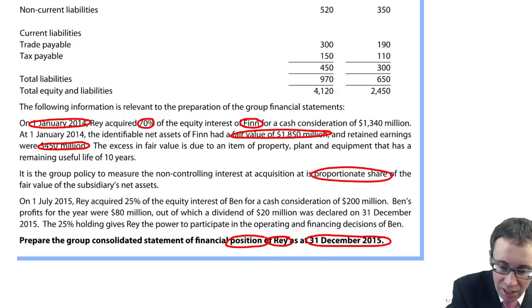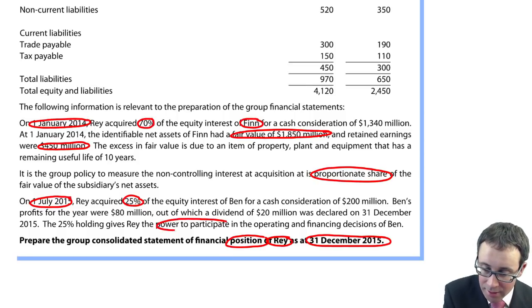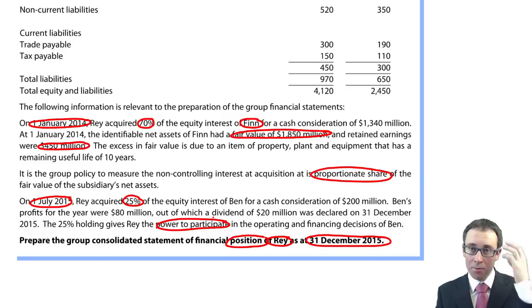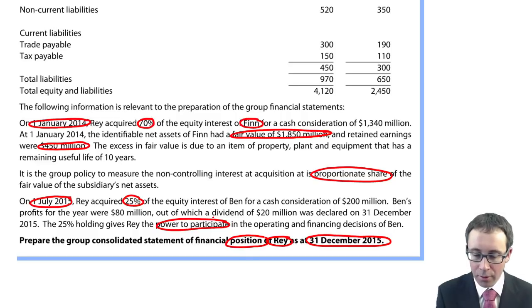On the 1st of July 2015, halfway through the current year, we acquired 25% of the equity interest of Ben for a cash consideration of 200 million. The profits for the year were 80. A dividend of 20 was declared on the 31st of December. We have the power to participate in the operating and financing decisions. So we have influence. Therefore, we have an associate.